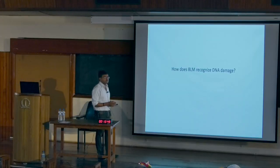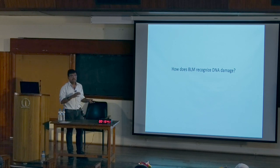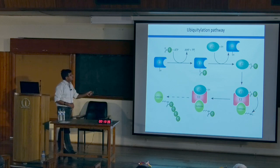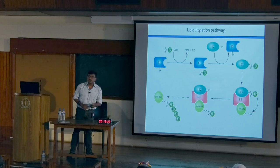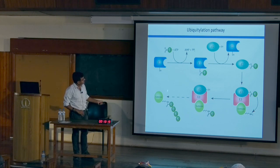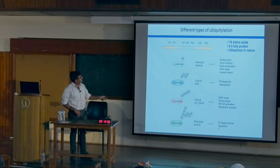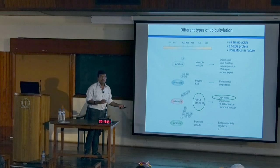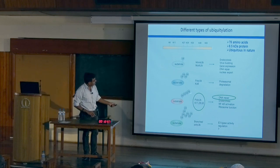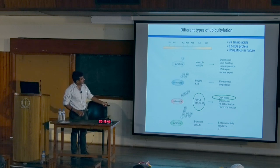Now, how does BLM recognize DNA and bind to regions of damage? Before going into that, let me briefly describe the ubiquitylation pathway. Ubiquitin is an 8 amino acid protein added to a target protein through a 3-step mechanism involving E1, E2, and E3 enzymes — the E3 ligases are the most celebrated as they direct specificity. There are different types of ubiquitylation: one pushes cells into a degradation program, and another type is required for signal transduction including DNA repair.